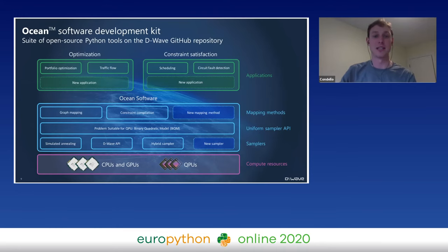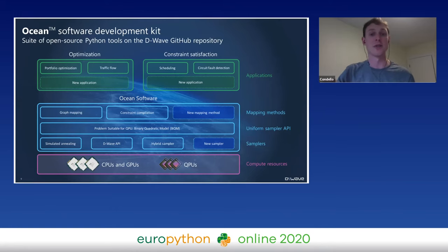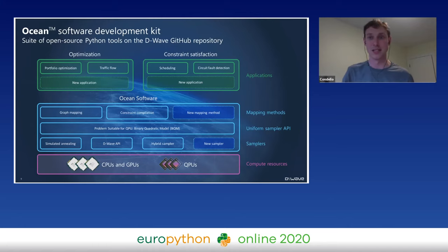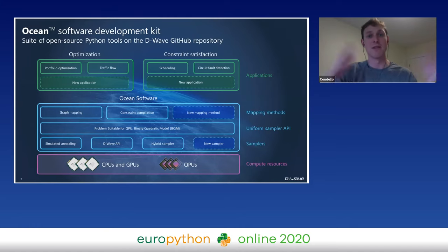Starting at the bottom of the stack, you have CPUs, GPUs, and QPUs. Sitting above that, you have a set of samplers — this is the level at which binary quadratic models are solved, a set of algorithms and packages people use to solve that problem class. Above that, we have a uniform abstraction level for these different solvers, because they all have different needs, strengths, and weaknesses. Finally, sitting above that, we have mapping methods, like the NetworkX package, and then our applications.